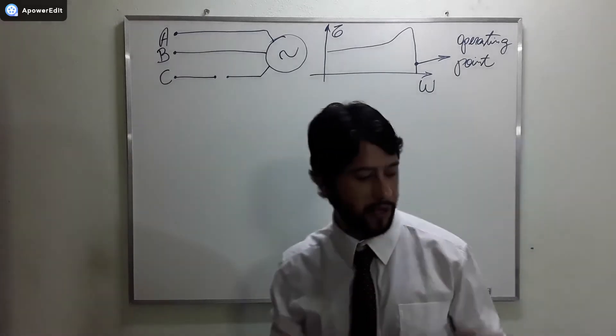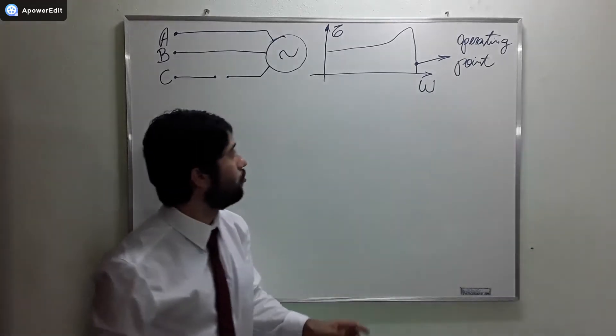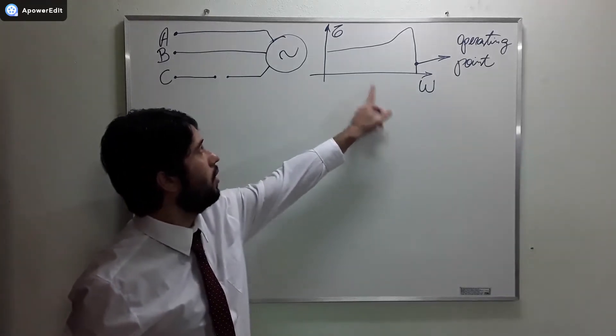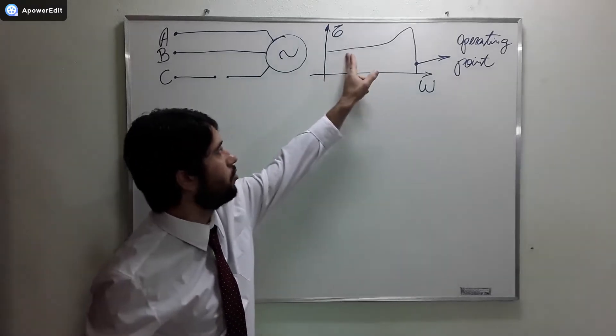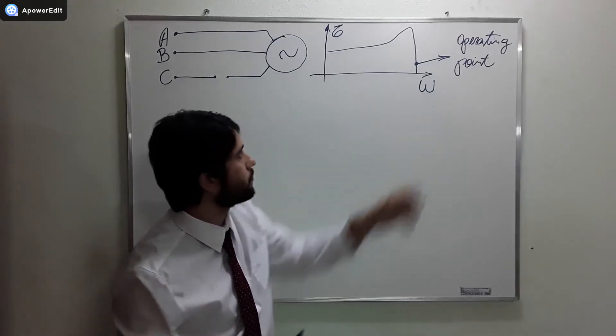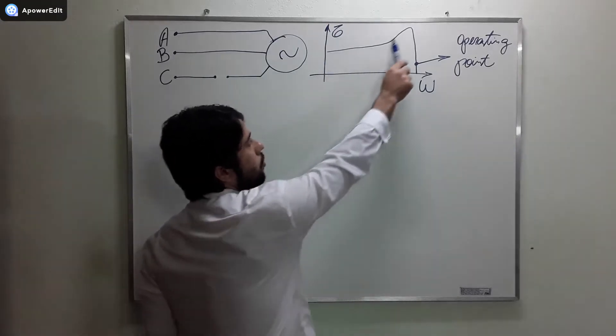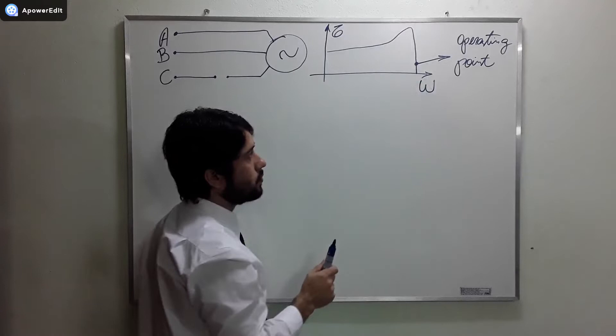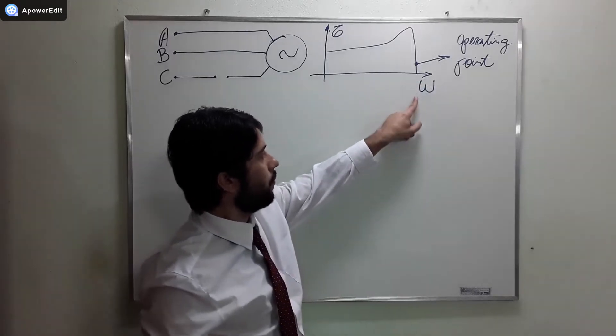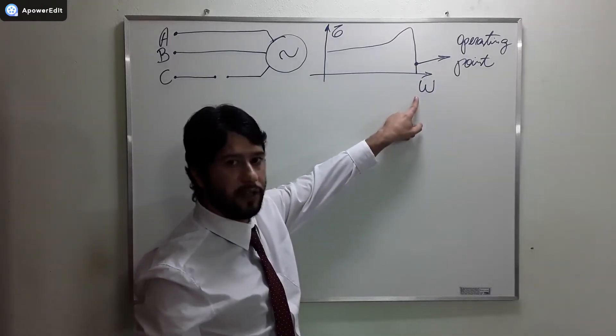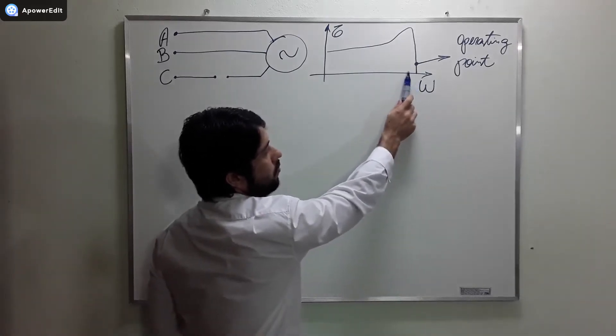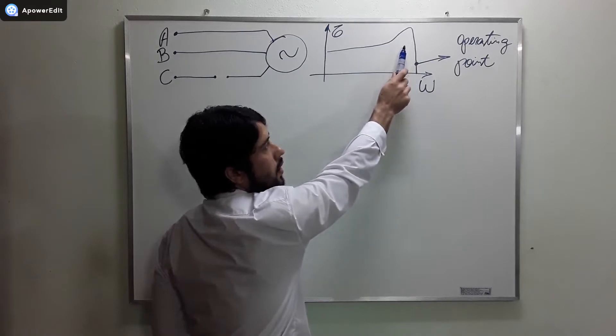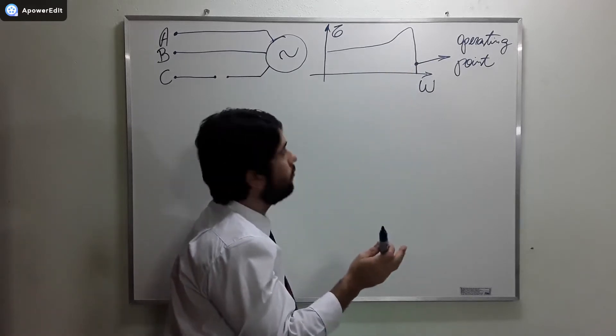First of all, to begin solving this exercise we need to understand the torque angular velocity curve. This is the torque angular velocity curve. The motor behaves like this. If the velocity decreases, then you can see that if the velocity decreases, the torque increases. What does this mean?